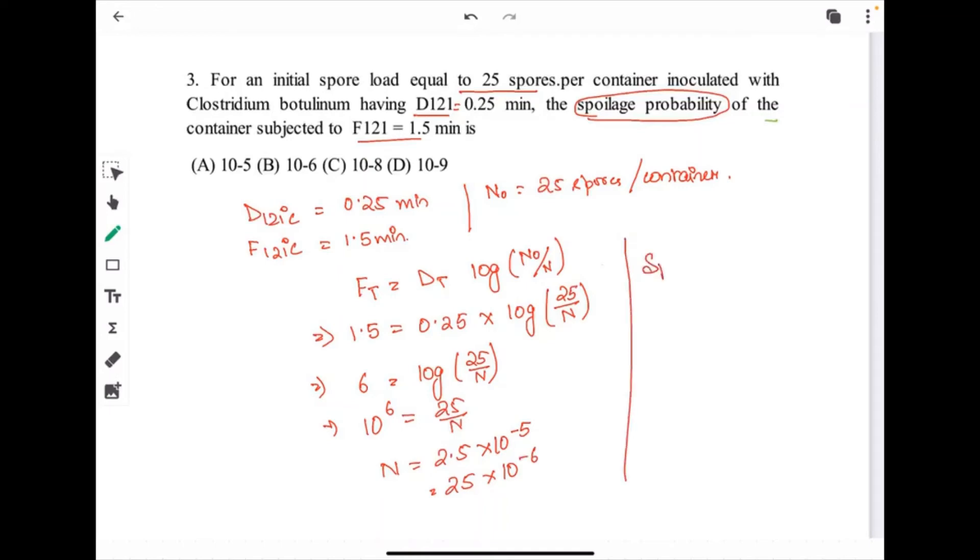Now, we have to find spoilage probability. Probability will be N by N0. What we have N? 25 into 10 to the power minus 6 divided by what is N0? That is 25. So, this spoilage probability will be 10 to the power minus 6. B is the correct answer.